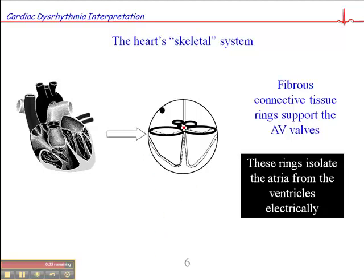The only electrical link between the atria and the ventricles is the AV node and bundle of His. Consequently, rather than looking at the heart as a two-sided pump left-to-right, from an ECG perspective we look at it as a two-sided pump top-to-bottom — looking for atrial activity and ventricular activity, and asking whether the two are working in sync with one another.